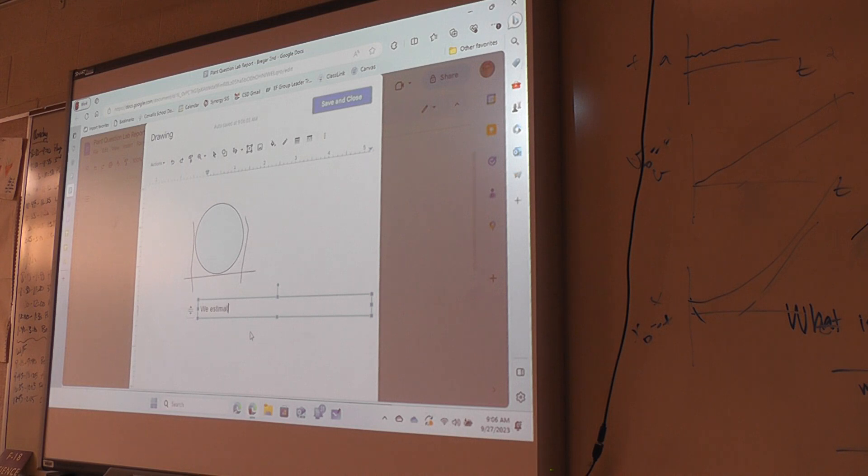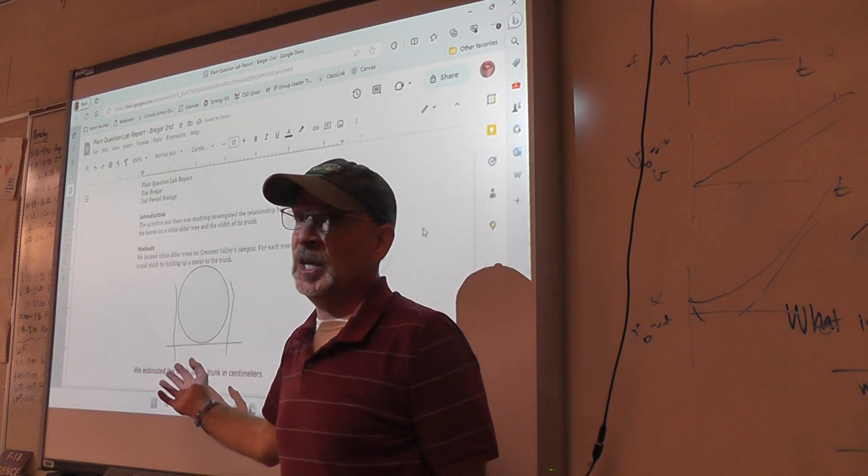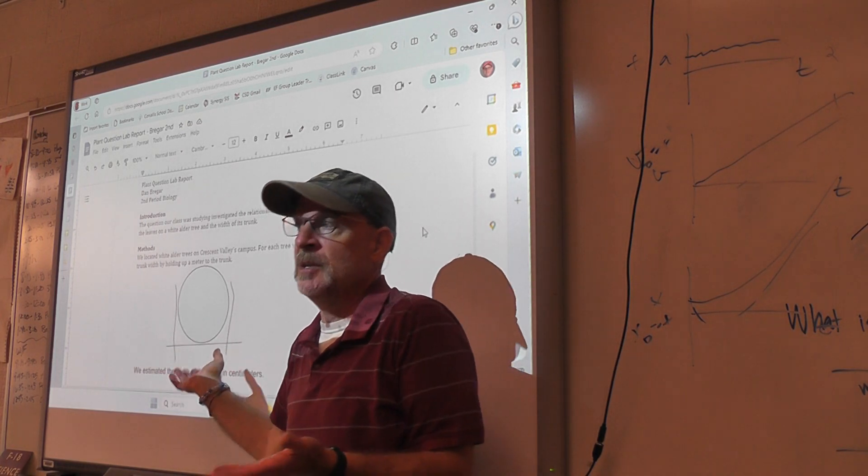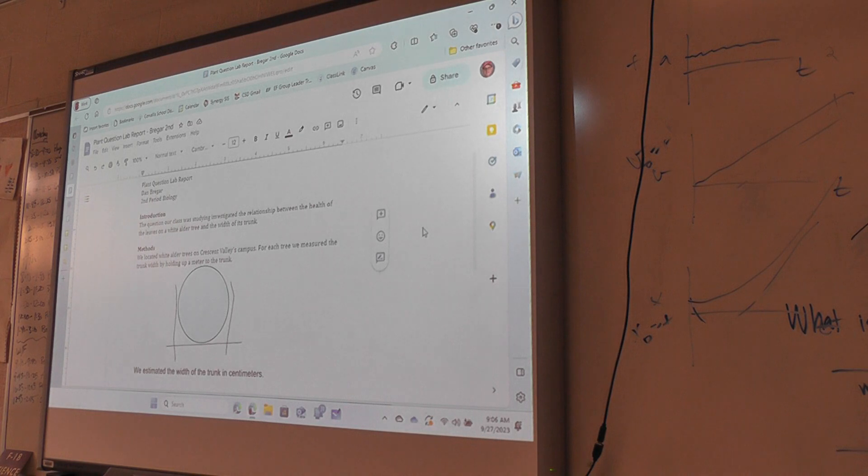and then I'm going to just kind of make a little arrow that just kind of shows that we just sort of estimated. Oh, and that didn't stick, estimated, and then I can even type, I can type some words. We estimated the width of the trunk in centimeters. Something like that doesn't take long, and that's actually really helpful information. I mean, you could probably do better than I did. I think just about anybody could do better than I did, but that's not terrible.